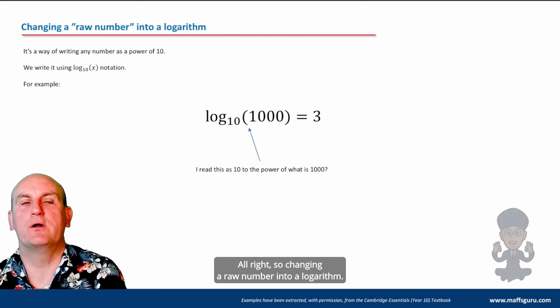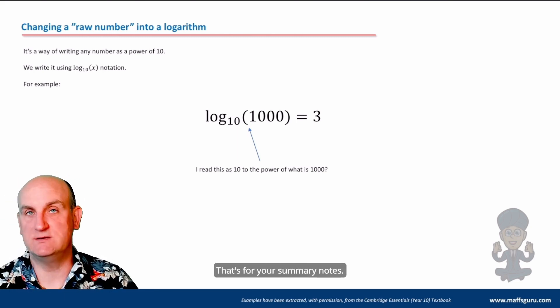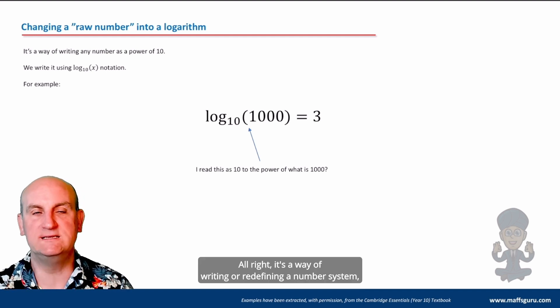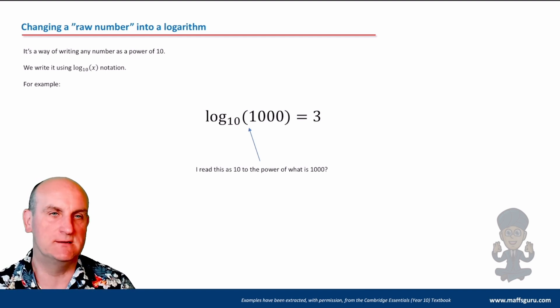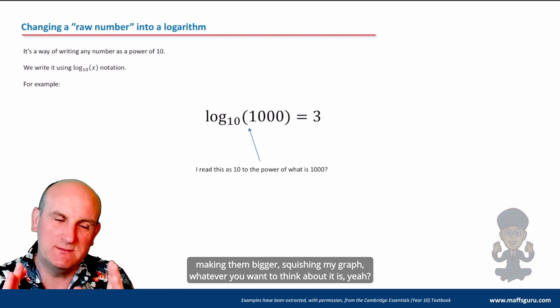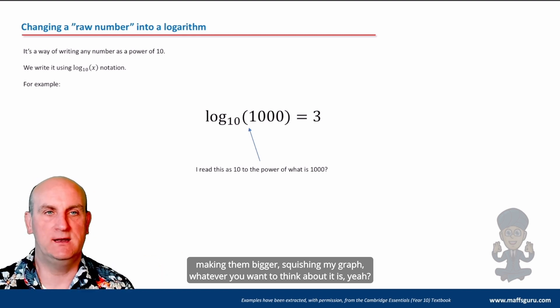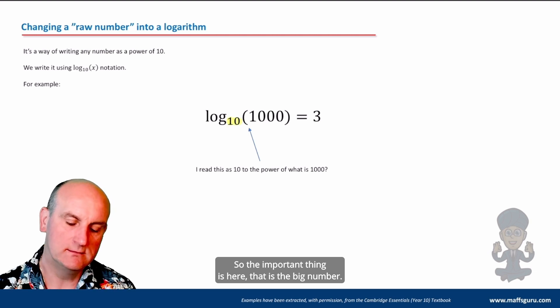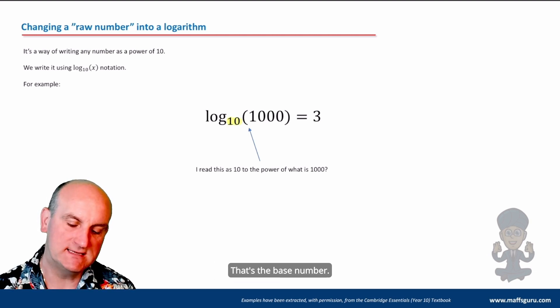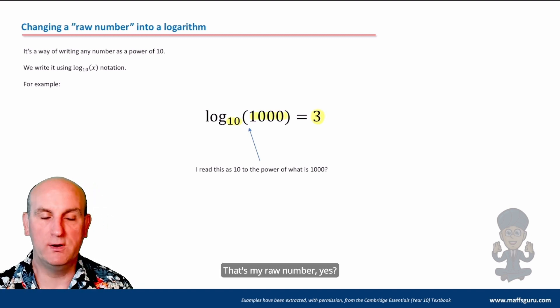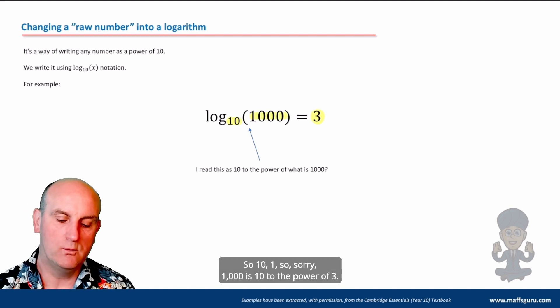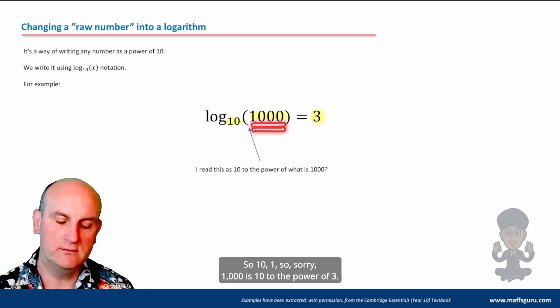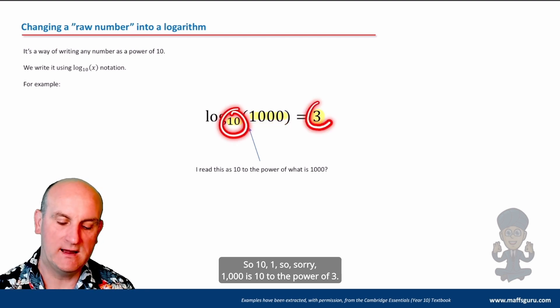Changing a raw number into a logarithm. There we go. That's for your summary notes. It's a way of writing or redefining a number system, making them bigger, squidging my graph, whatever you want to think about it is. So the important thing is here, that is the big number, that's the base number, that's the power, and that's my raw number. So 1,000 is 10 to the power of three.